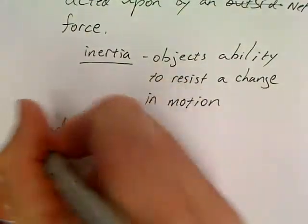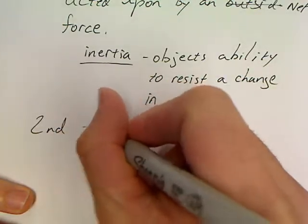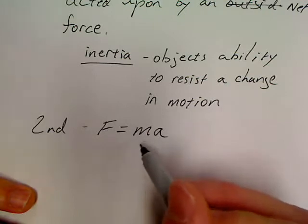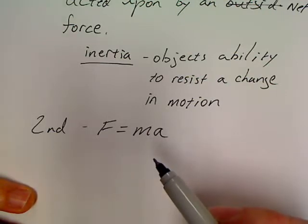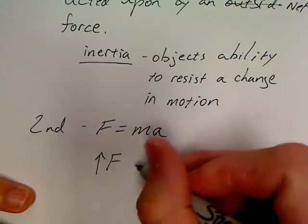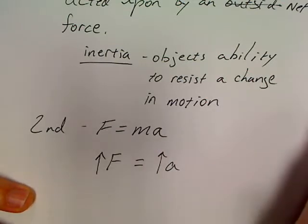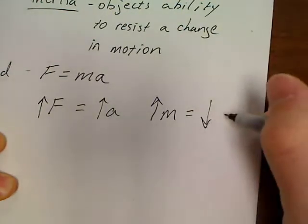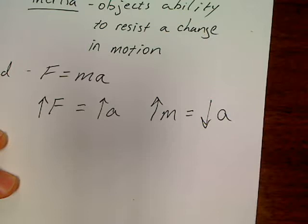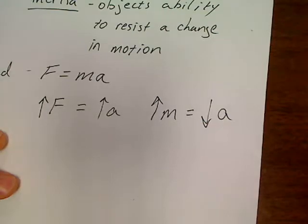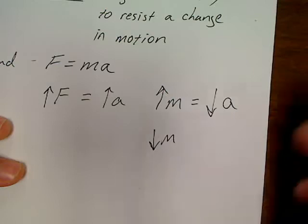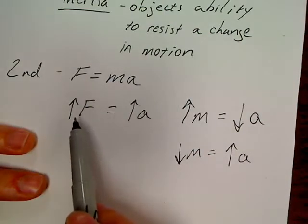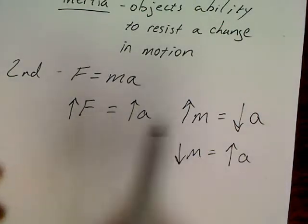Newton's second law says F equals MA. Force is directly proportional to mass and directly proportional to acceleration, while mass and acceleration are inversely proportional to one another. If you have a greater force, that will lead to a greater acceleration. A greater mass will yield less acceleration, which is why in car racing one of the goals is to decrease the mass of the vehicle, therefore increasing the acceleration. You can also increase the size of the engine, increasing the force and increasing acceleration.